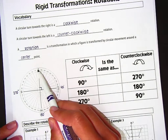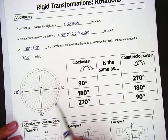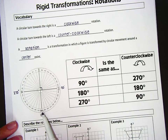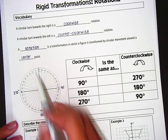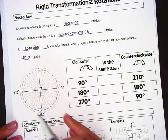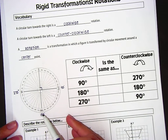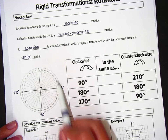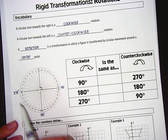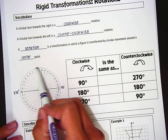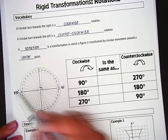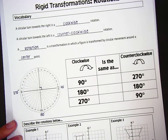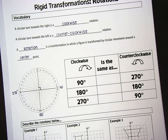Those two rotations are actually the same thing. If we do a 180 degree clockwise rotation, that's the same as a 180 degree counterclockwise rotation. A 270 degree clockwise rotation is really the same as a 90 degree counterclockwise rotation. So you can name some rotations in two different ways, and we're going to talk about those rotations here in just a second.